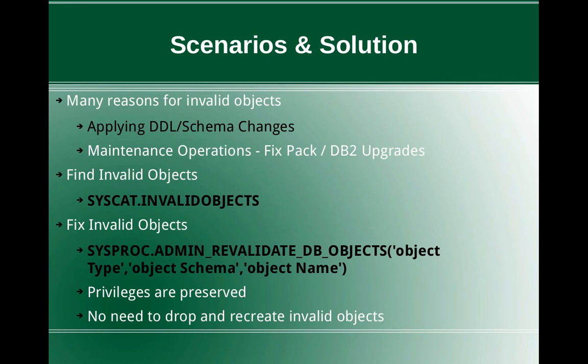This slide talks about the scenarios and solution. There are many reasons for invalid objects to be present in the database. The most typical reason would be applying DDL and schema changes. For example, if you have a table A and there is a stored procedure accessing that table, a UDF based on that table, or a view based on that table, and as part of your schema change you drop the table but leave the other dependent objects, then those objects will be marked as invalid.